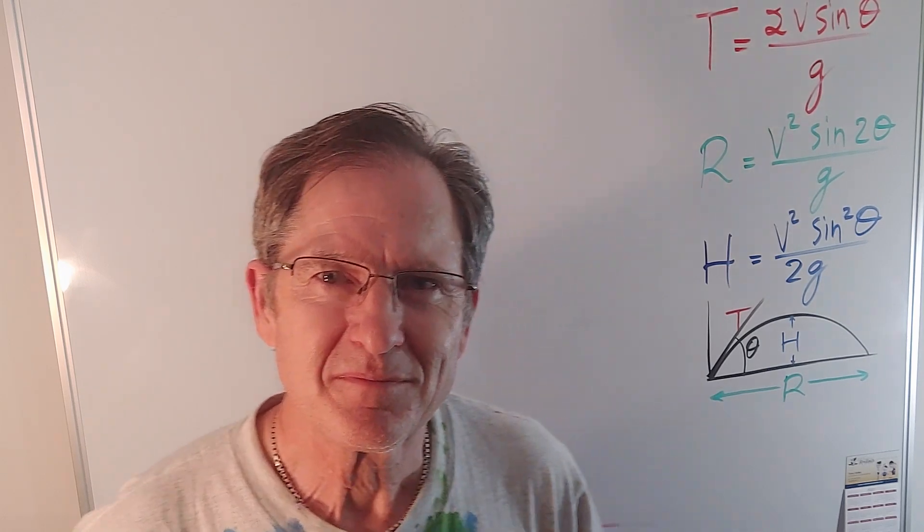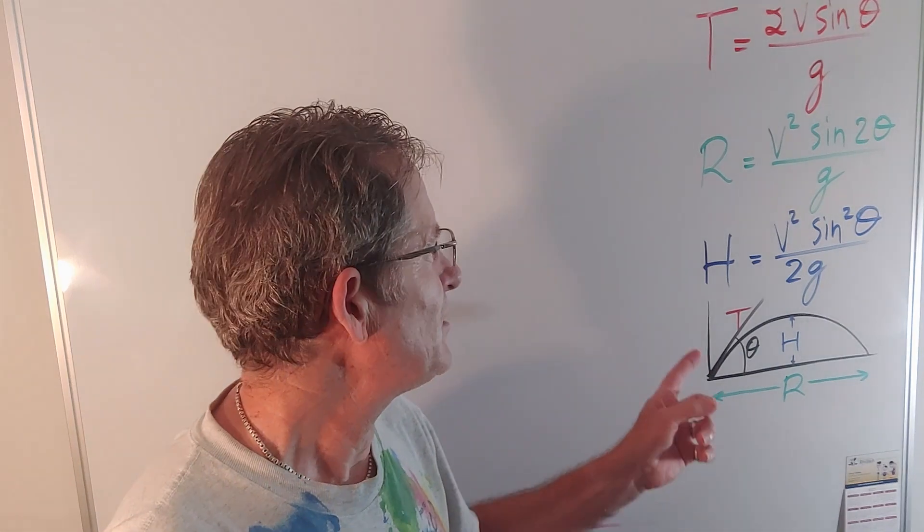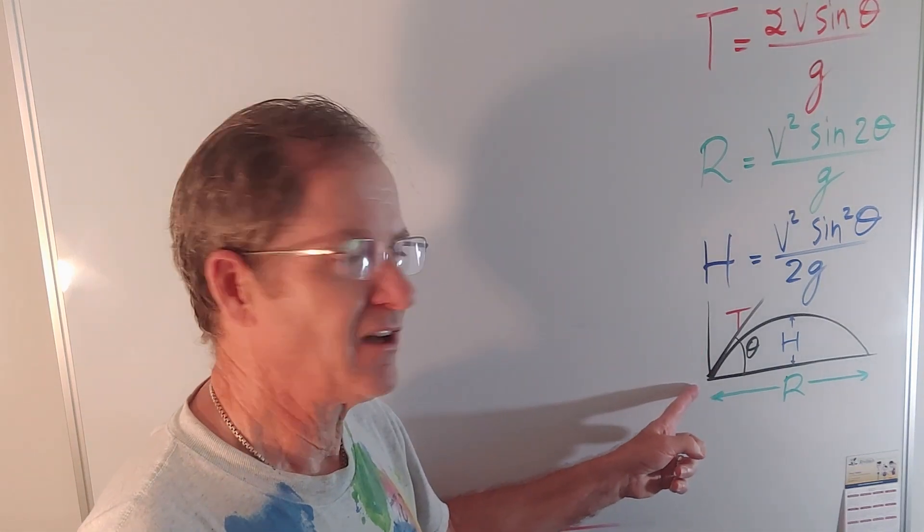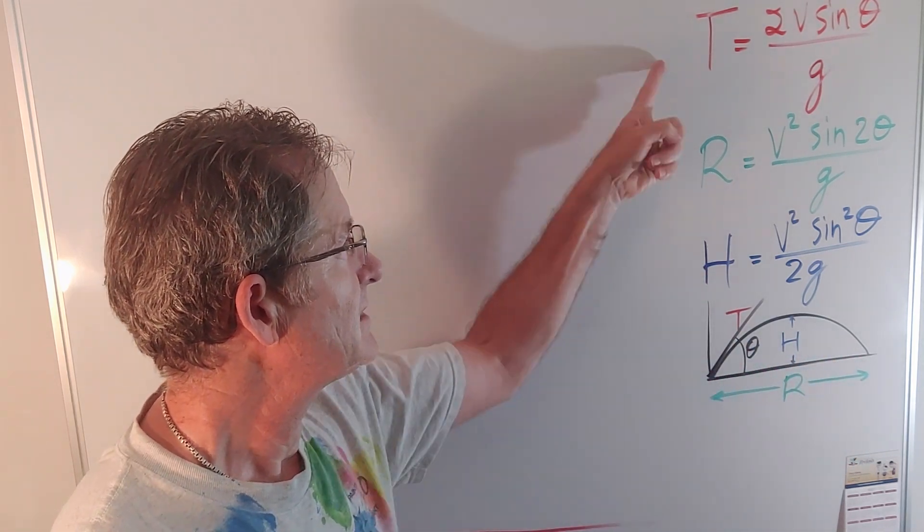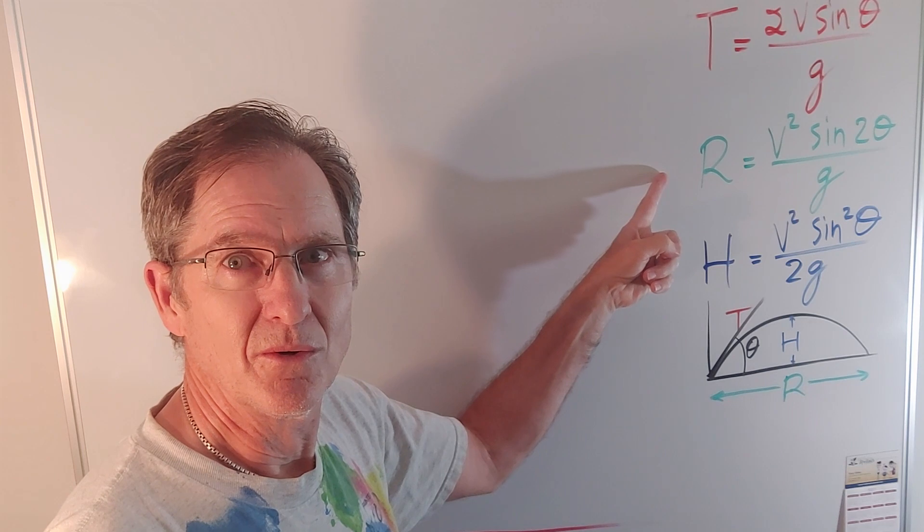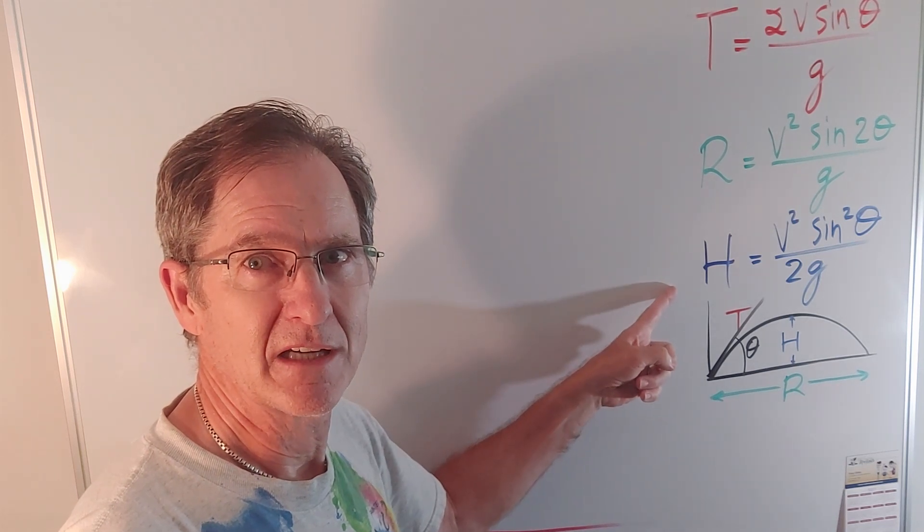Now we've been looking at projectile motion where a projectile is launched and lands at the same height. These are the formulas for the total time in the air, the horizontal range, and the maximum height.